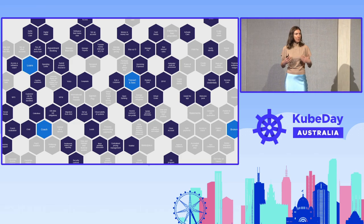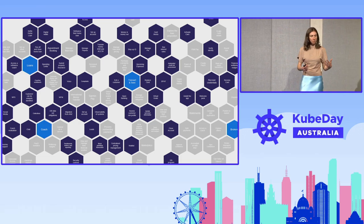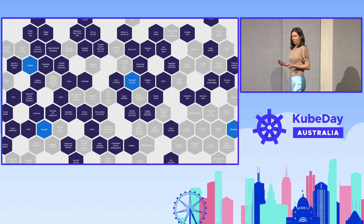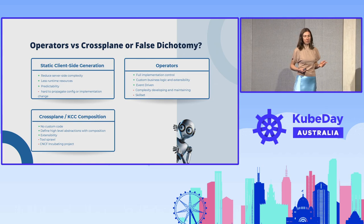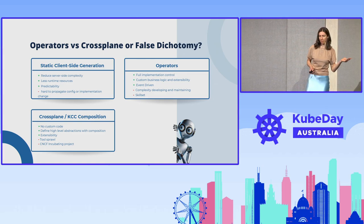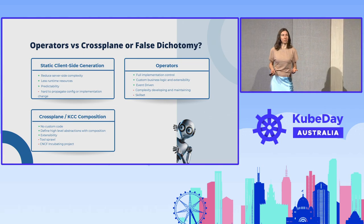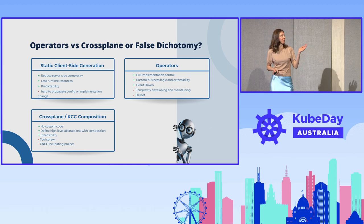On the other side, we as platform engineers want to enable teams to do this in a cost-efficient, secure, and compliant way. So there are a lot of challenges to address. As I was talking about operators' performance at Kubernetes community days a couple of months ago, it sparked a bigger discussion in the community about operators versus cross-plane or other approaches on how to build an API-driven platform. And there is indeed no shortage of tools for doing that.